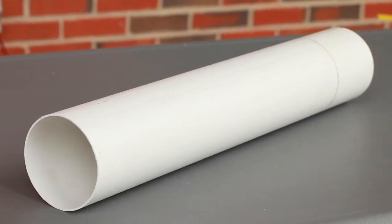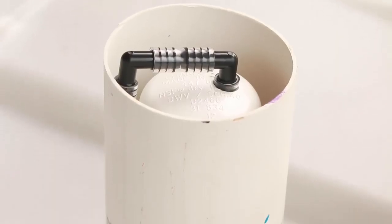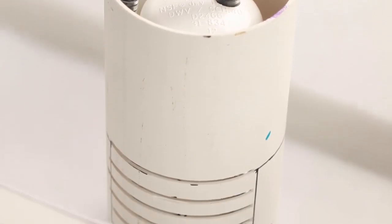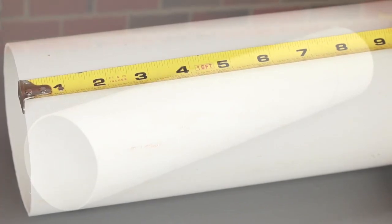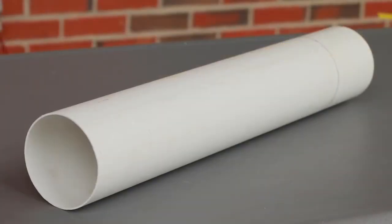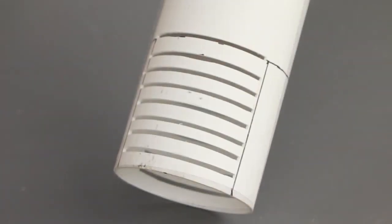Start with the 4 inch pipe. This pipe is the sleeve that protects the bell siphon and keeps the grow bed media from interfering with the bell siphon action. The final length of this sleeve will be 8 inches, but we suggest that you start with a 2 foot long section so it will be easier to hold when cutting slits in the side.